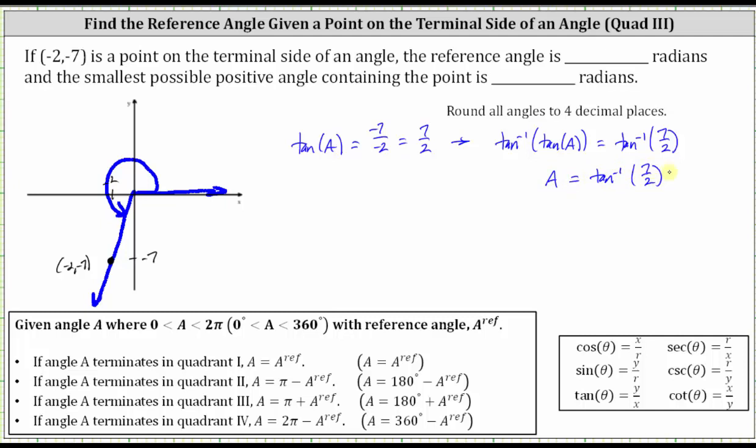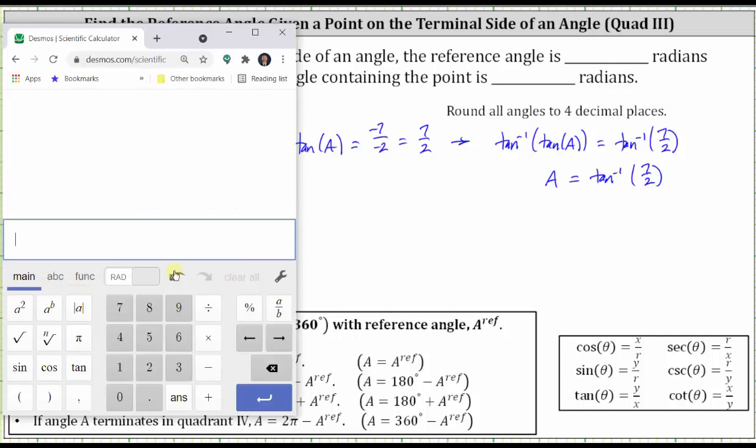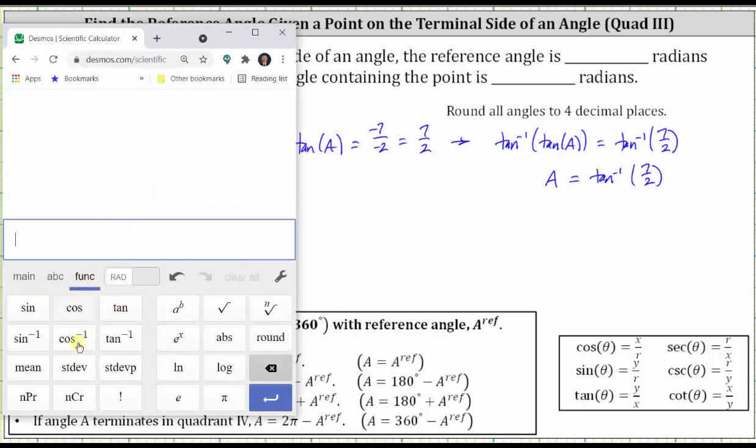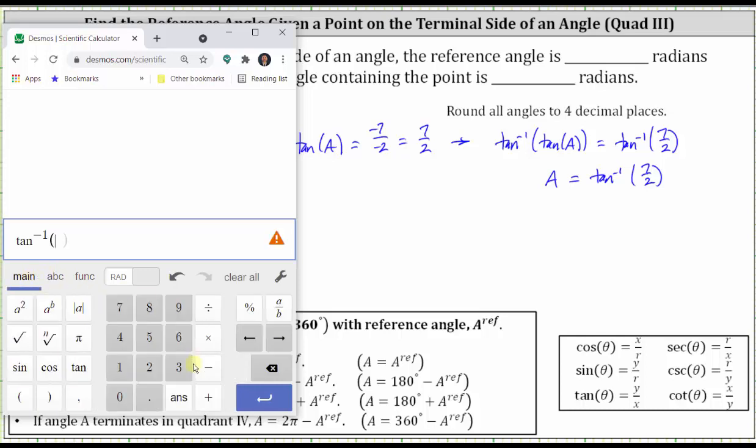Now we'll go to the calculator, evaluate inverse tangent of 7 halves, which will help us determine the reference angle, as well as the angle we are looking for. It's important to make sure the calculator is in radian mode. Click functions, click inverse tangent, click main, enter 7 divided by 2, right arrow, close parenthesis, and enter. To four decimal places, we have 1.2925 radians.